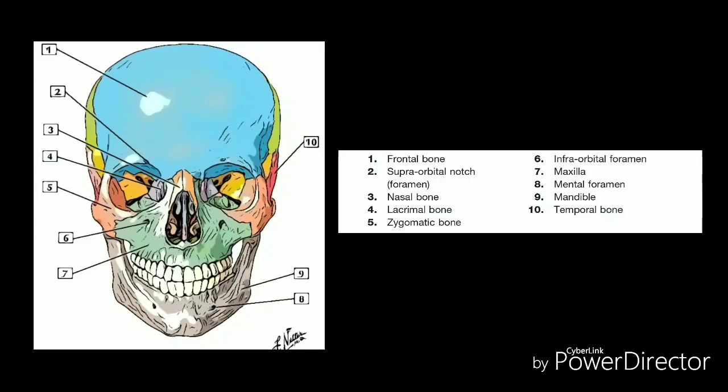The maxilla bones fuse in the midline and form the upper jaw. They provide the bed for the upper teeth, the floor of the nose, and the base of the orbits. The maxilla articulates with the zygomatic, nasal, lacrimal, and palatine bones. The palatine bones fuse in the midline to form the palate, located at the back of the nasal cavity, forming the roof of the mouth and the floor of the orbit.